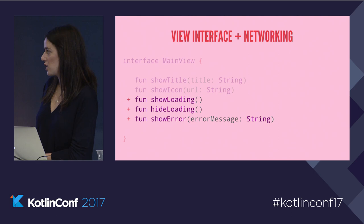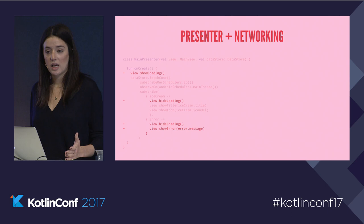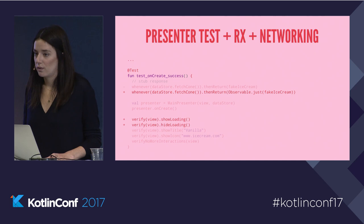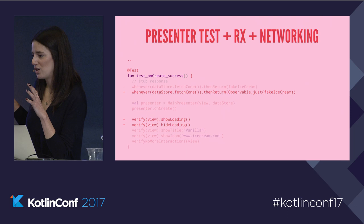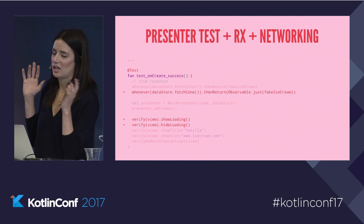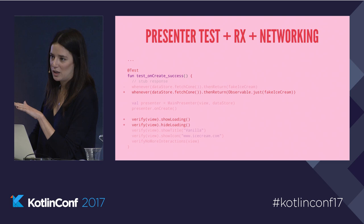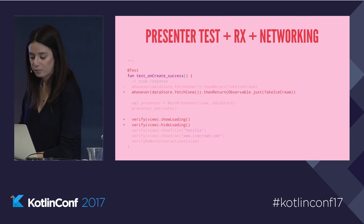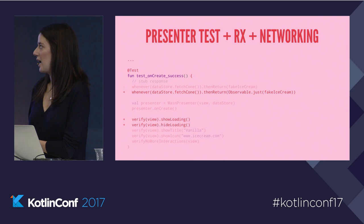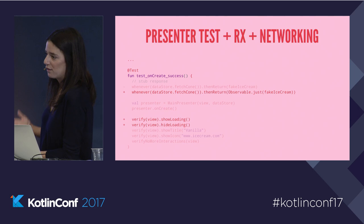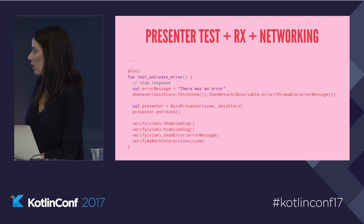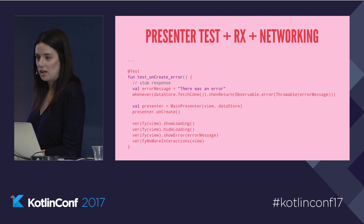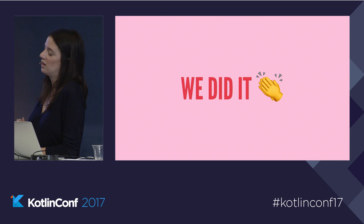If we update our presenter — not too bad. We add showLoading, hideLoading on both success and error, and make sure to show our error. Our test update is also fairly simple: instead of just returning the ice cream object we return an observable. We add methods for show and hide loading. The test onCreate method is now testOnCreateSuccess, which means we also want to test our error case — same setup, but whenever we're fetching the cone we return an error, and then verify show loading, hide loading, show error. Everything is good. We built our app, used the MVP pattern, it's well-tested, it matches what the designer wanted.